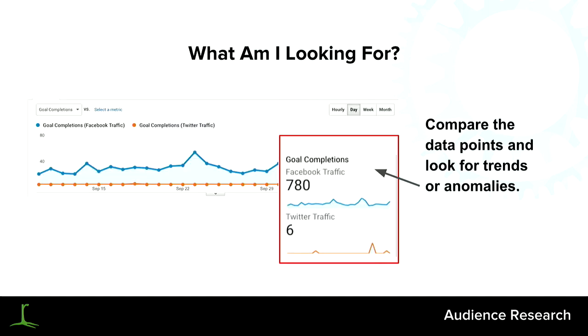In terms of what you're looking for — you're kind of messing around with your Google Analytics data and looking for trends or anomalies. In one client's case, we found 780 conversions through Facebook traffic versus six for Twitter. So it stands to reason that Facebook is a pretty important channel for them, and we need to incorporate that into both the marketing strategy and the website strategy. Google Analytics has also released a lot of machine learning capabilities recently, where it can actually show you things it sees or you can ask it specific questions like which channel drives the most conversions.